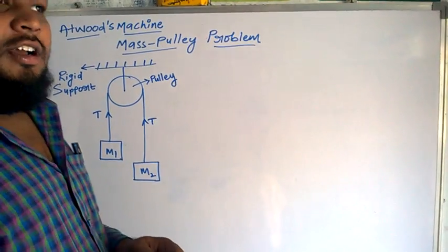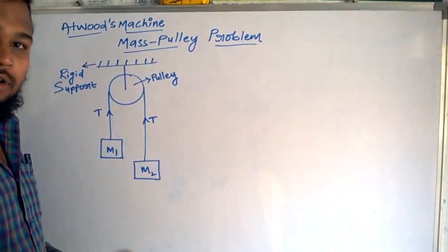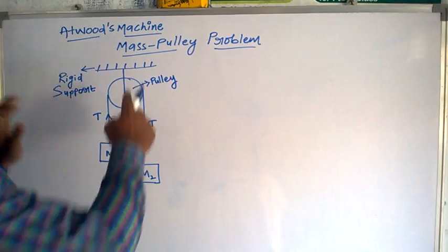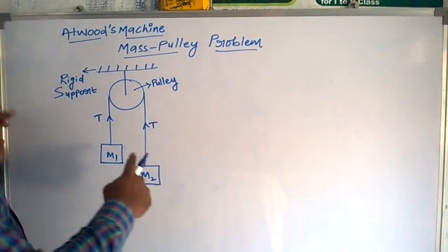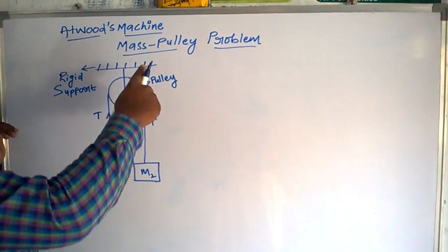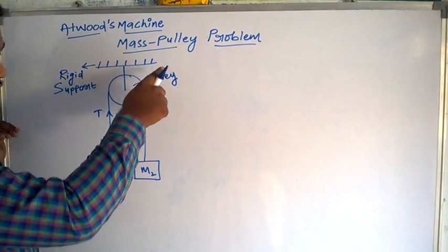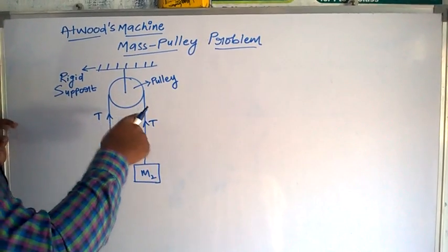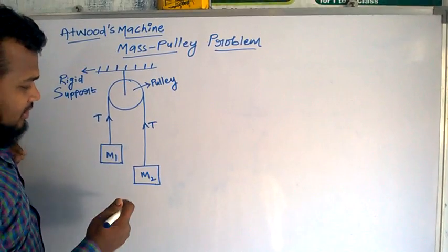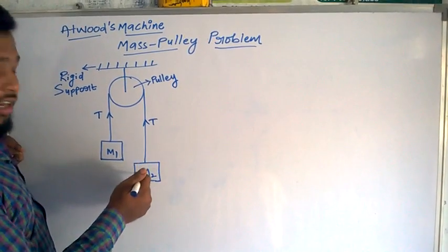Hi guys, welcome to the session of physics. Today I am going to teach you how to solve this mass-pulley problem, also called Atwood's machine. This is a rigid support and this is a pulley. The pulley is massless, so you can see here the mass m2 is here and mass m1 is here.